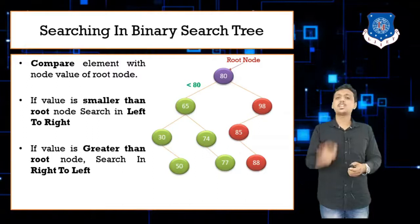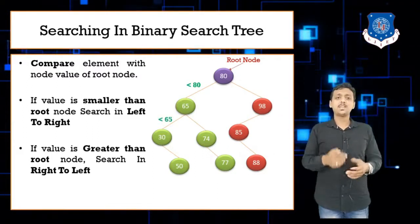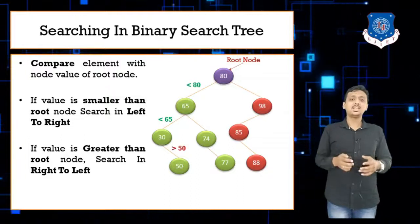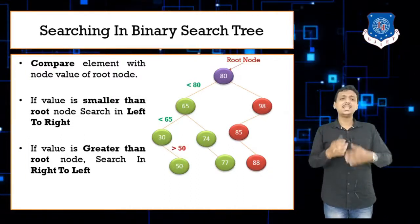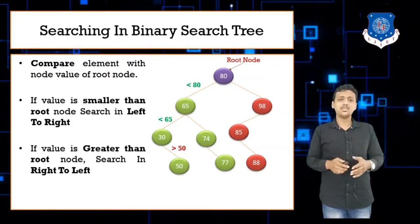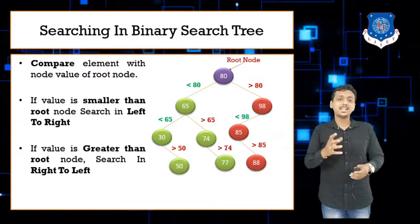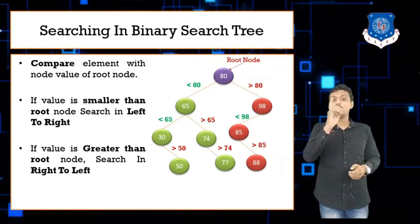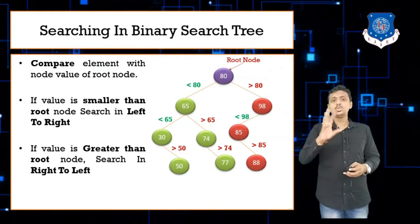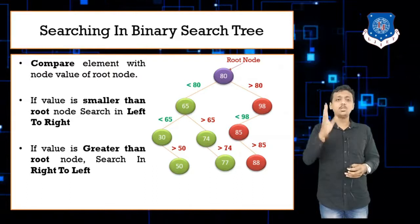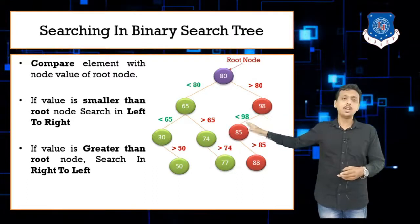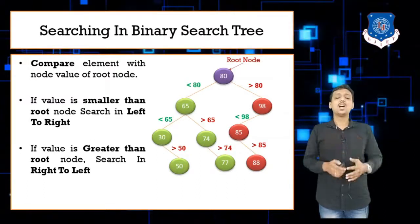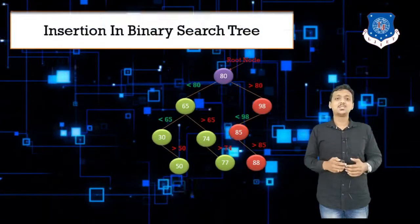In searching in a binary search tree, always start with the root node. For example, 80 is the root, 65 is on the left of 80, and 30 is on the left of 65 since 30 is less than 65. The smallest values must be on the left side and the largest on the right side. Compare your key with the root: if smaller, go left; if greater, search in the right subtree. That's the searching operation.